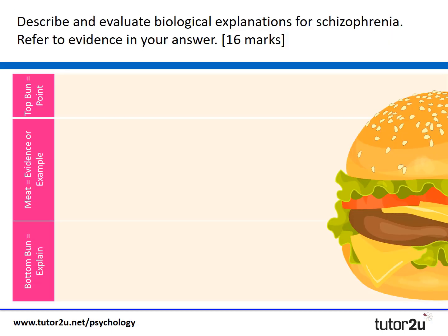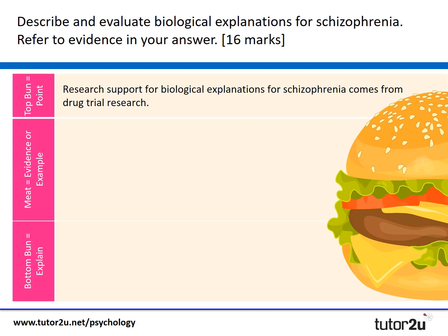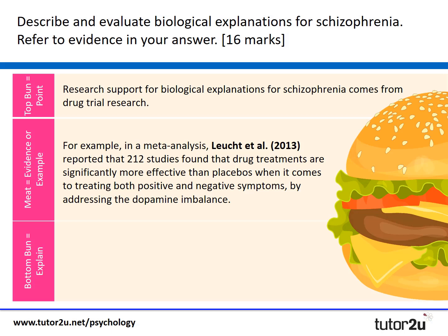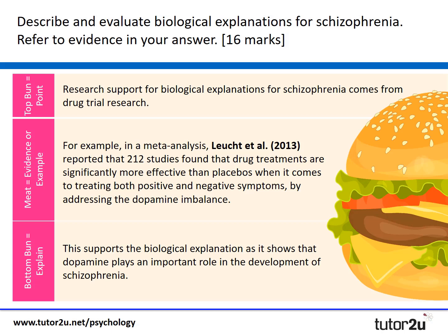If we imagine the question: 'Describe and evaluate biological explanations for schizophrenia, refer to evidence in your answer' — a simple evaluation paragraph might note that research support comes from drug trials. In one meta-analysis, researchers reported that 212 studies found drug treatments are significantly more effective than placebos at treating both the positive and negative symptoms of schizophrenia by addressing the biological imbalance, clearly showing dopamine plays an important role.